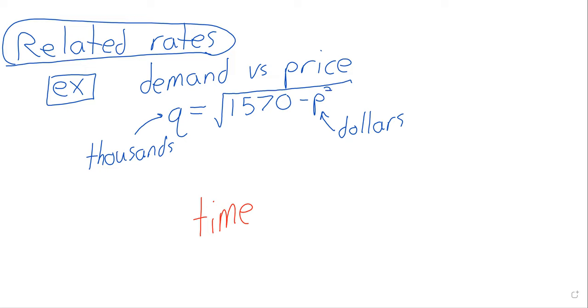And that hidden variable is time. Time is passing. The price is changing as time passes. Demand is changing as time passes. So even though you don't see the letter T in that equation, and you don't see anything explicitly involving time, both Q the demand and P the price are changing as time passes. Meaning that these two quantities are related to time.